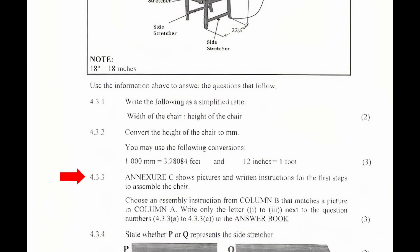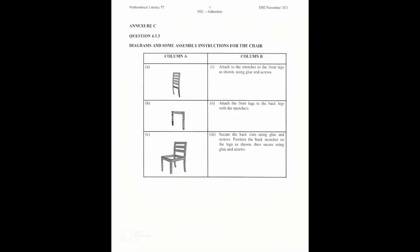4.3.3. An exercise here shows pictures and written instructions for the first steps to assemble the chair. Choose an assembly instruction from column B that matches a picture in column A. Write only the letters 1, 2, 3 next to the question numbers 4.3.3A to 4.3.3C in your answer book.